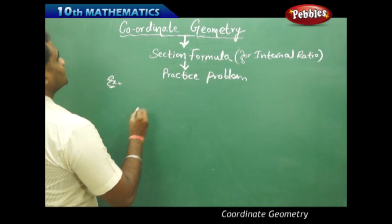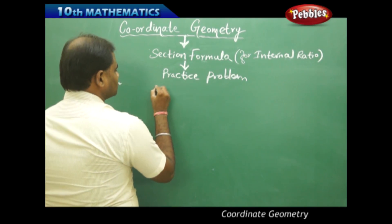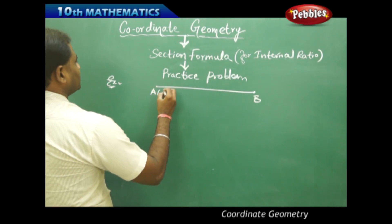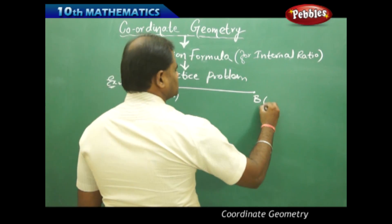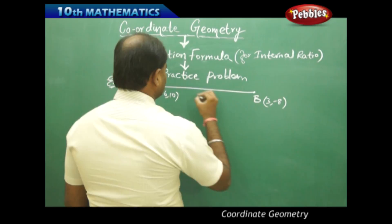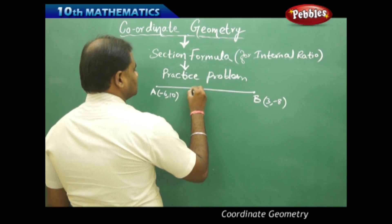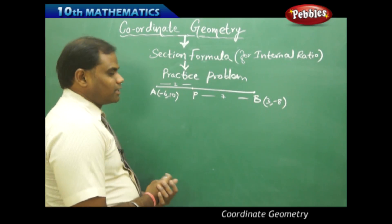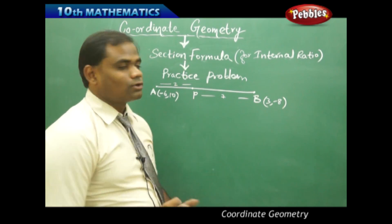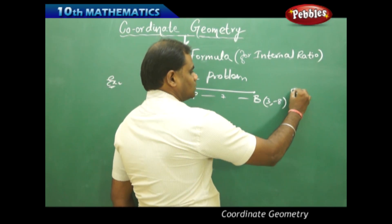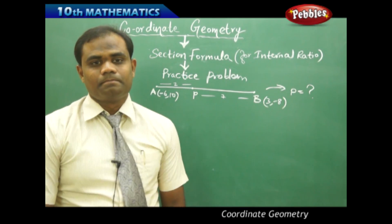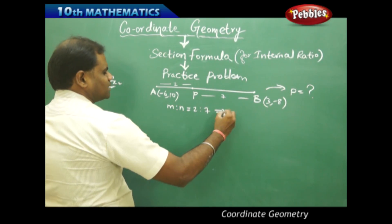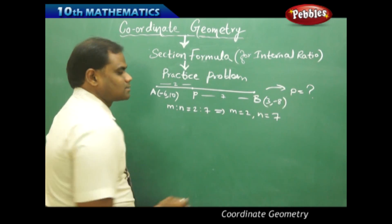For example, the question is: I have a line joining two points A and B, where the coordinates of A are (-6, 10) and the coordinates of B are (3, -8), and there is a point P which divides AB in the ratio 2:7 internally. I need to find the coordinates of P. Clearly, here m:n is 2:7, so m = 2 and n = 7.